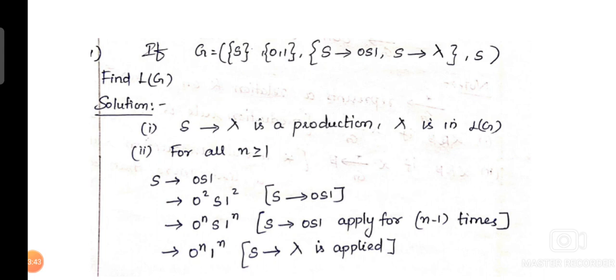We have to analyze the common format of the string that can be produced by the grammar. Let us take the first production rule S tends to 0S1. We can make substitutions. When we substitute 0S1 for S, it will become 00S11, which can be written as 0², S1². Again, if we substitute 0S1 in the place of S, we will get 000S111. So for any number of times, we can do the substitutions. From that, we know the common format of our string is 0^n S1^n.